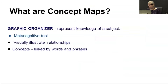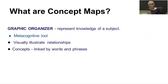Concept maps are basically a graphic organizer — a way to represent knowledge of a subject and walk somebody through all the different aspects of a particular topic. It is definitely a metacognitive tool used to visually illustrate relationships. You can do it with words and lines, and in most cases add images, making it even more visually stimulating. Concepts shown can be linked by words or phrases.